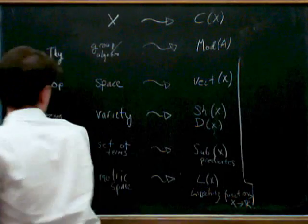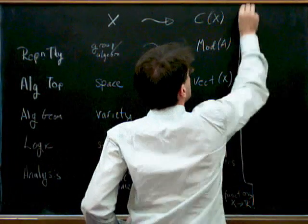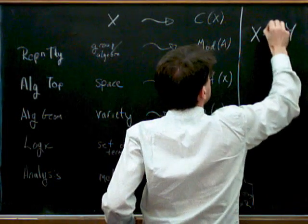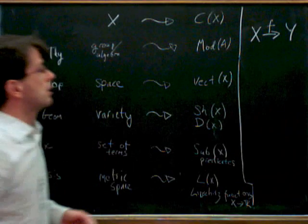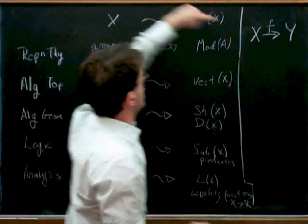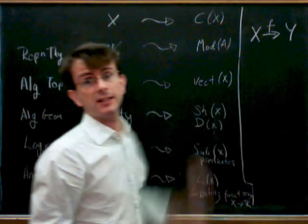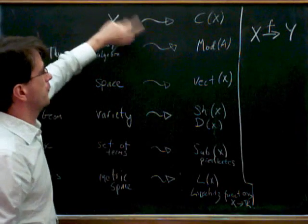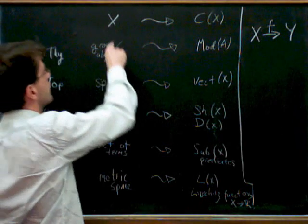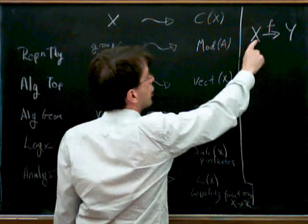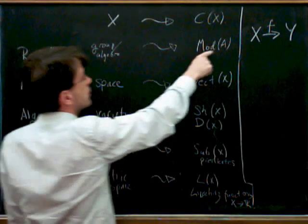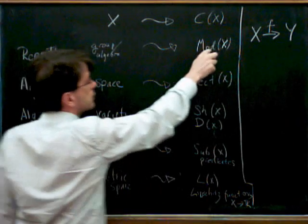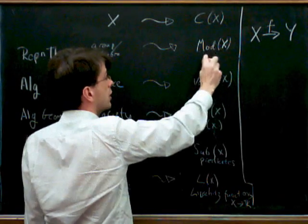So the question then arises: what happens if we have a morphism from X to Y? How is that going to relate to the category associated to X and the category associated to Y? Well, the wonderful thing is that you get lots of functors in these different situations. So if we have a group homomorphism to another group, then we get various functors such as induction, co-induction, and restriction.